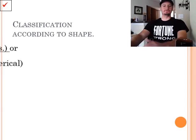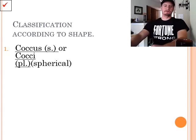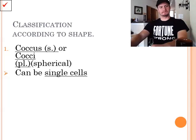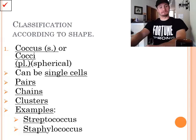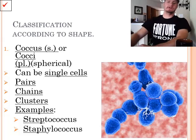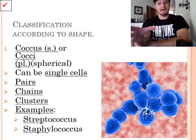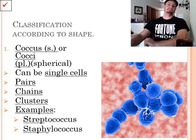So, up next, bacteria are all classified according to their shape. The first type is the coccus or cocci, which is the spherical form. It can be single cells, found in pairs, or in chains, or clusters. Some examples include streptococcus, which causes strep throat, and staphylococcus, which causes staph infections. So, as you can see here, right below me, what we have is a wide variety of different spheres all combined into a cluster.